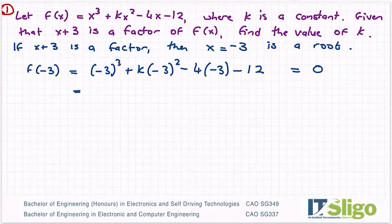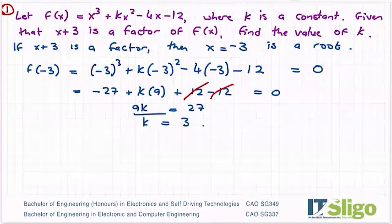So let's work that out. (-3)³: 3 times 3 is 9, 9 times 3 is 27, minus by minus by minus is a minus, plus k times 9. Minus by minus is a plus 12, minus 12 equals zero. So plus 12 minus 12 cancels. I have 9k equals 27. K equals 3.